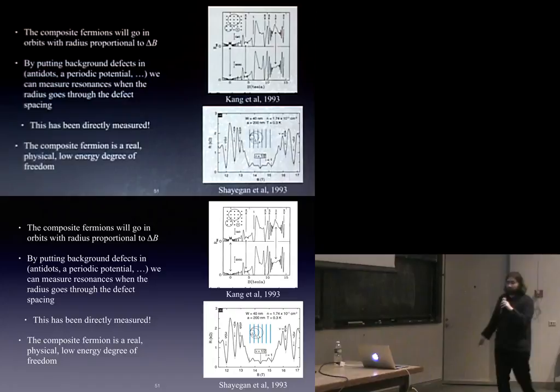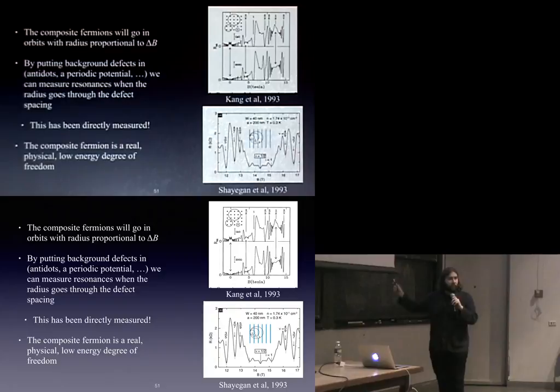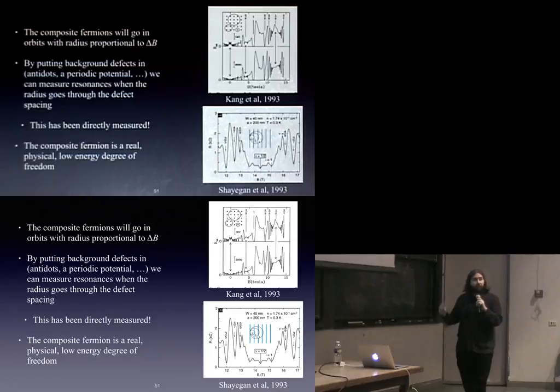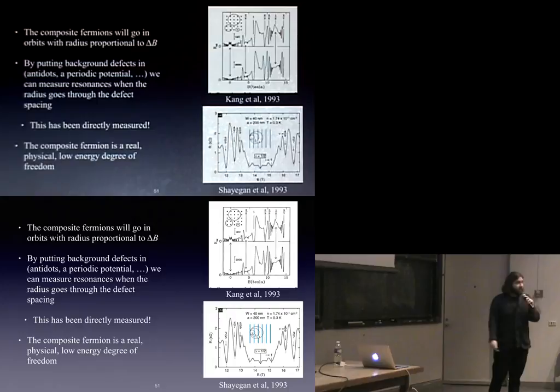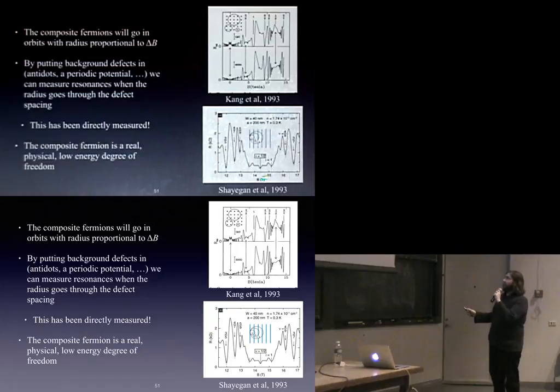Moreover, this picture of seeing resonances looks pretty nicely reflection symmetric about one-half, as do all of these other sequences. The punchline I want you to take away is that while I started this story with some ludicrous picture of electrons gobbling up magnetic field lines, it's a useful intuitive guide because we find experimentally that the light degrees of freedom are charged particles that feel an effective magnetic field strength proportional not to the actual magnetic field strength, but to a field strength measured by the distance from the half-filling value.